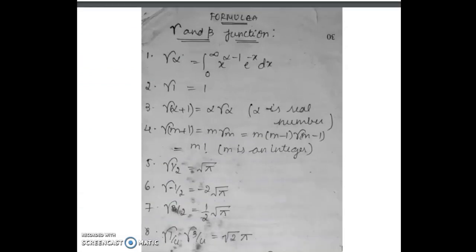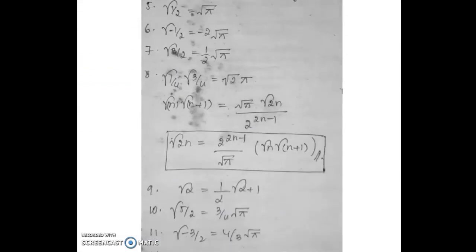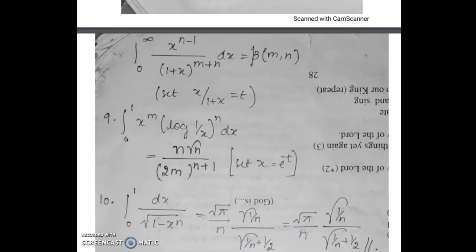These are some gamma and beta function formulas. This is a rough book — in those days we didn't have any printed reference to collect data from, so wherever there was empty space in the rough book, we filled it in. These are complex variable formulas.